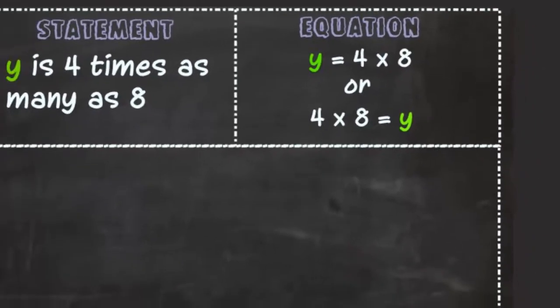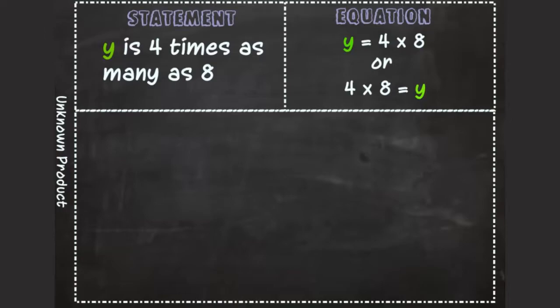The first factor is the number of groups. In this equation, 4 is the first factor. The second factor is the number in each group. 8 is the number in each group.